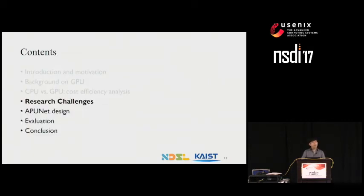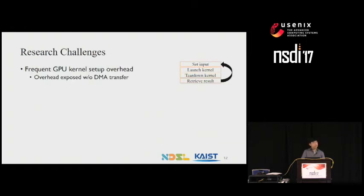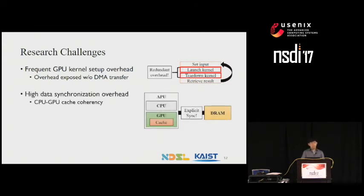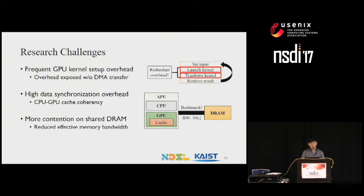Are there any challenges in building an integrated GPU-based high-speed packet processor? First, there is overhead from frequent GPU kernel setup. Since there is no longer a DMA transfer to overlap with kernel execution, frequent GPU kernel launch and teardown time becomes a dominant overhead. Second, guaranteeing cache coherency between CPU and GPU results in high data synchronization overhead — CPU and GPU need to carry out explicit synchronization to reflect changes in data to shared DRAM, which is very expensive. Lastly, APU's sharing of DRAM incurs more contention on the memory controller and bus, which can reduce the effective memory bandwidth, and DRAM bandwidth is typically an order of magnitude lower than discrete GPU's GDDR memory.